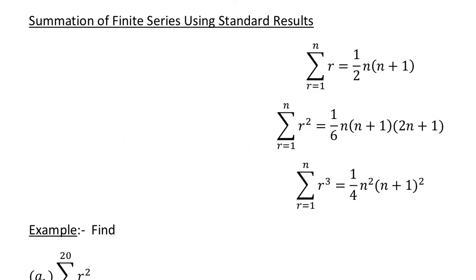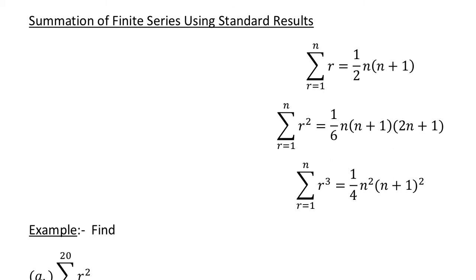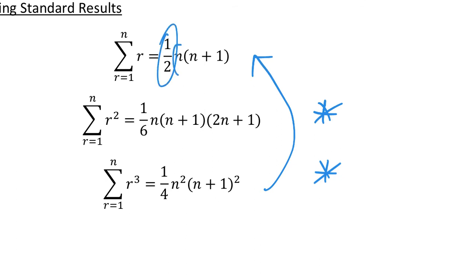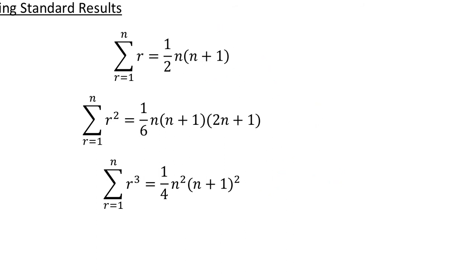Next we're going to look at the summation of finite series using standard results. We have three results here. For CCEA Northern Ireland board examinations, the second and third results are given in your formula booklet. The first isn't, but remember you can relate them — the square root of a quarter gives a half, and so on. These are the three results we'll use for the next questions.